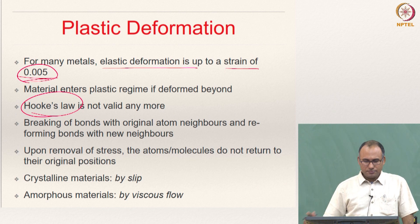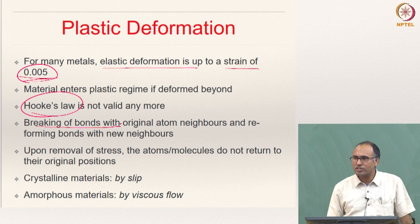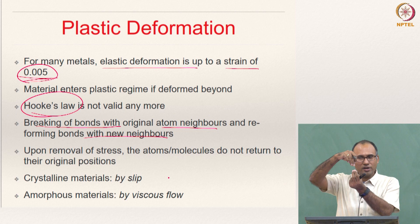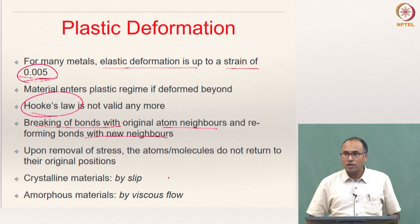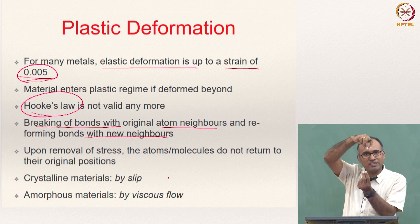The plastic deformation is a result of the breaking of bonds with original atom neighbors and reforming of the bonds with new neighbors — that is what we have discussed in the case of dislocation motion. The original bond is broken and a new bond is formed with the neighbors. As soon as you remove the stress, that means you unload the material, the atoms will not go back to their original neighbors; they will stay with the new neighbors, meaning you are not able to go back to your original bond.